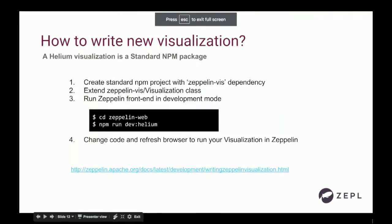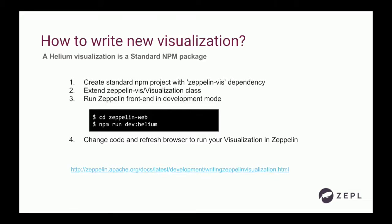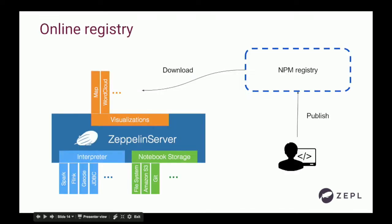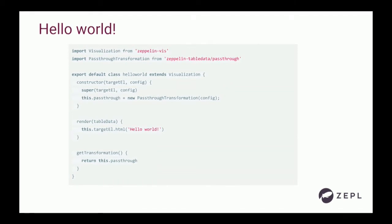To understand how we enabled this one-click installation and how you can see all available visualizations in the community: first you need to understand what a Helium visualization package looks like. A Helium visualization package is a standard NPM package — the Zeppelin community didn't invent a special Helium package format. It's just a standard NPM JavaScript package. The only thing you need to do is have a Zeppelin visualization dependency in your standard NPM project, and then import, extend, and implement the visualization class. That's all you need to do.